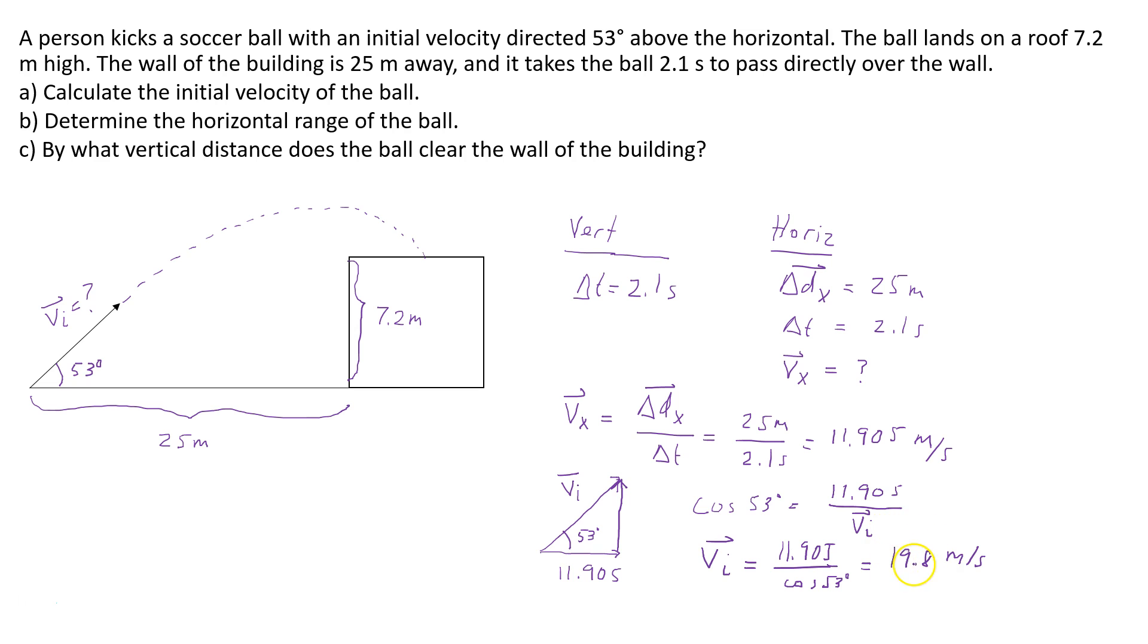If we look at the question, if we look at the numbers that are given, all the values that are given are to two significant digits. So our answers also must have only two significant digits. So the 19.8 meters per second that we got, we have to round it.